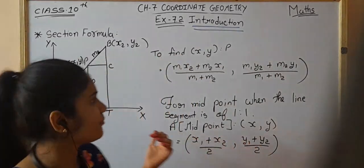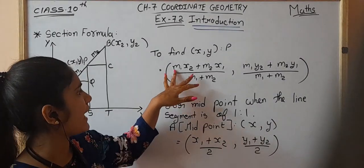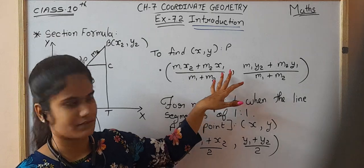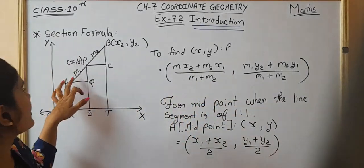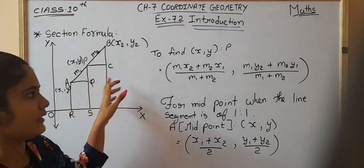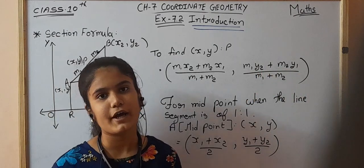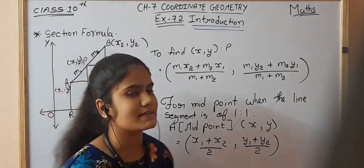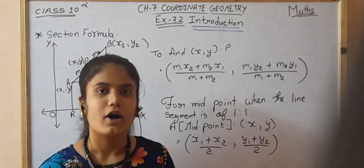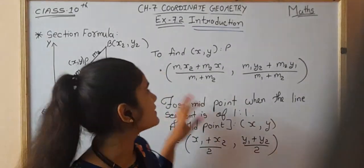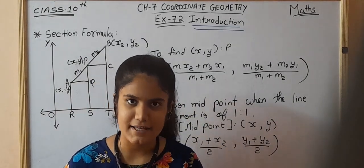To find the coordinates of P, there is a formula known as the section formula: m1 into x2 plus m2 into x1, upon m1 plus m2, gives the x-coordinate of point P. And m1 into y2 plus m2 into y1, upon m1 plus m2, gives the y-coordinate of point P. This is the section formula we are going to use in Exercise 7.2.